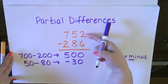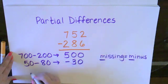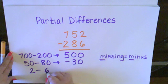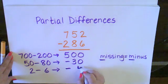And now I'm looking at my ones. I have two ones take away six ones. I'm going to write that on the side. Two minus six. And again, I have two and I need to take away six. So I'm missing or minus four.